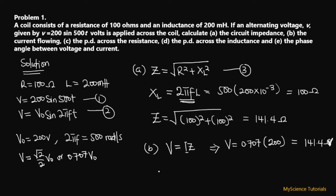Making current the subject: I = V/Z = 141.4 / 141.4 = 1 ampere.